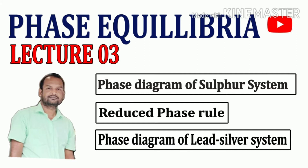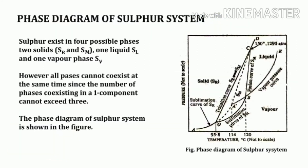Without any further delay, let us start today's class. Before discussing the phase diagram of the sulfur system, we need to understand what the sulfur system is. Sulfur exists in two crystalline forms: rhombic sulfur and monoclinic sulfur, with 95.6 degrees centigrade as the transition temperature at one atmospheric pressure, at which they can be transformed into one another.